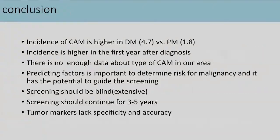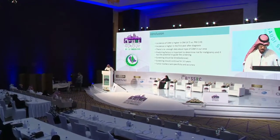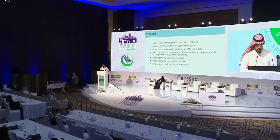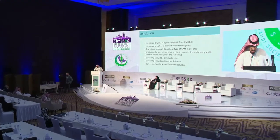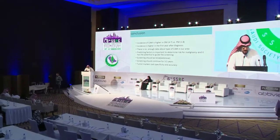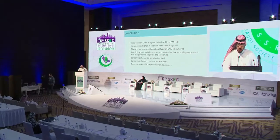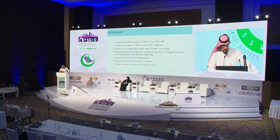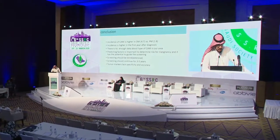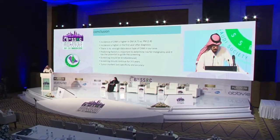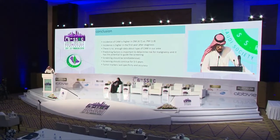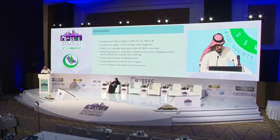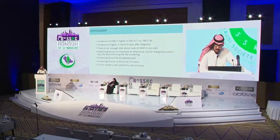In conclusion: incidence of cancer-associated myositis is higher in dermatomyositis with a relative risk of 4.7 and 1.8 in polymyositis; incidence is highest in the first year after diagnosis; there is insufficient data about cancer type and incidence in our region; predicting factors are important to determine malignancy risk and guide screening; screening should be planned/extensive and continue for three to five years; and tumor markers lack specificity and accuracy. Thank you very much.